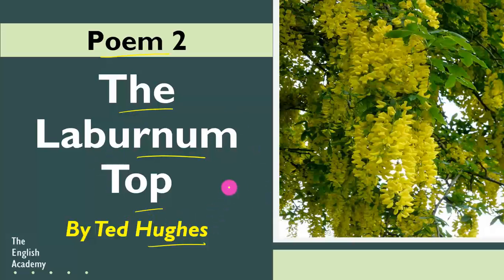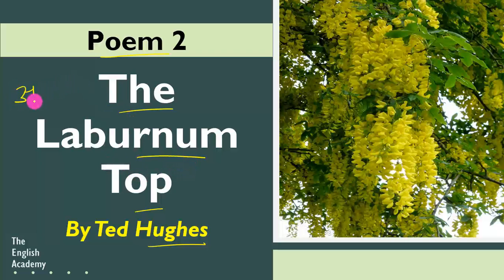Before proceeding with the chapter, first we will discuss the title. Laburnum is the name of a tree. It is a short tree with hanging branches, yellow flowers and poisonous seeds. Laburnum ko Hindi mein Amaltas ke naam se jante hain — Amaltas ka paed. So this is a common tree.